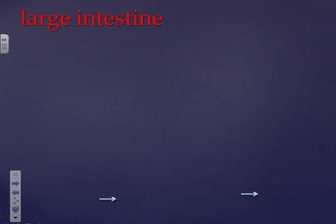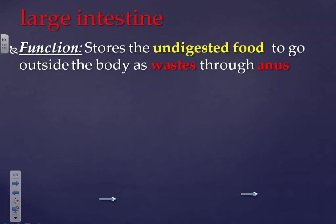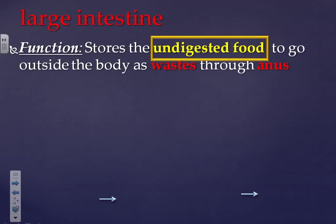After the small intestine we have the large intestine. It starts from the end of the small intestine and ends at the anus. The function of the large intestine is to store the undigested food — the waste — and then eject it outside the body.